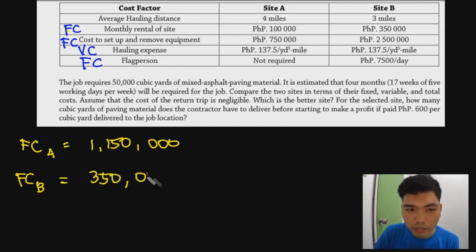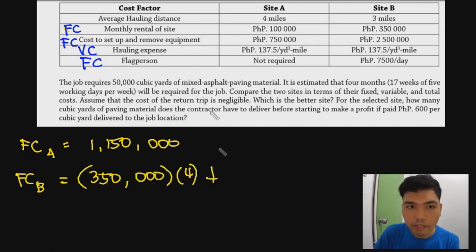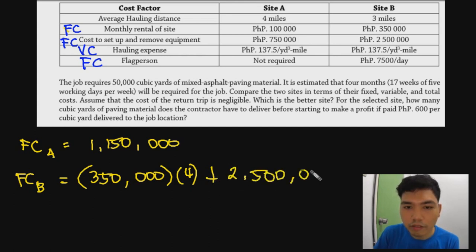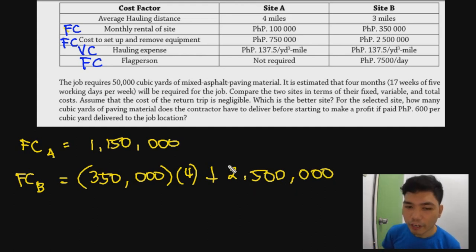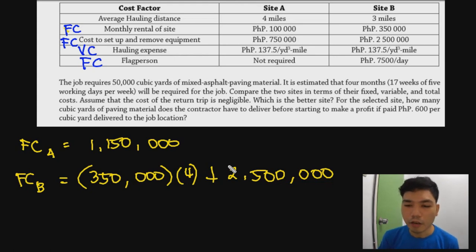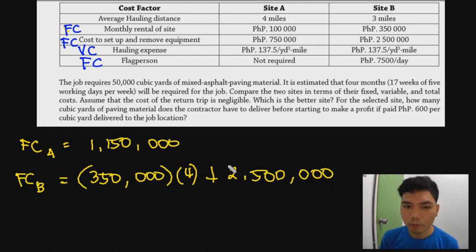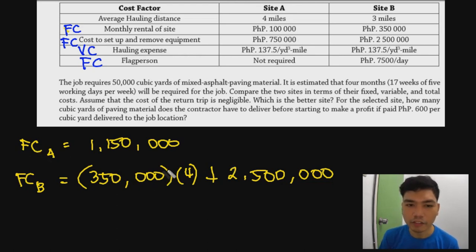Fixed cost for Site B: 350,000 monthly rental times 4 months, plus 2,500,000 for equipment setup. Additionally, the flag person costs 7,500 per day times 5 working days per week times 17 weeks. The total fixed cost for Site B is 4,537,500 pesos.